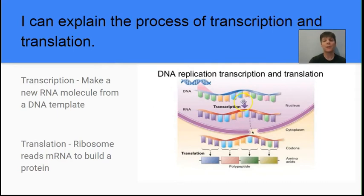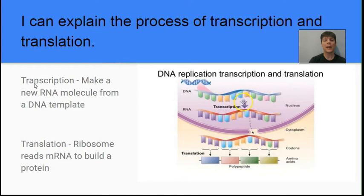Our next learning target is to explain the processes of transcription and translation. Transcription means we are building a new RNA molecule from a DNA template — the DNA is a pre-existing molecule used to make a new RNA molecule, happening inside the nucleus. Once the RNA is produced, it leaves the nucleus and travels to the ribosome, where the information in the messenger RNA is read to put together a polypeptide — a chain of amino acids — which becomes a protein. To remember the order, both words share T-R-A-N-S; transcription's next letter is C and translation's is L — since C comes before L alphabetically, transcription occurs first and translation occurs later.